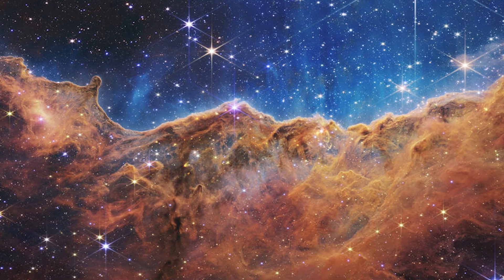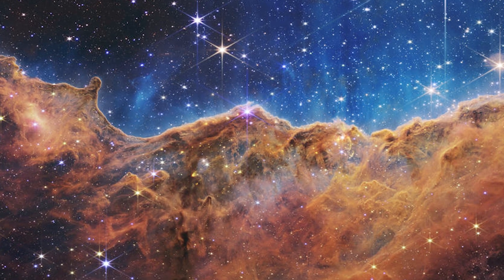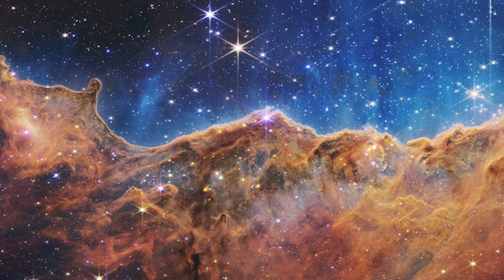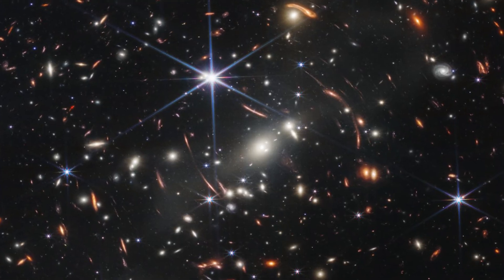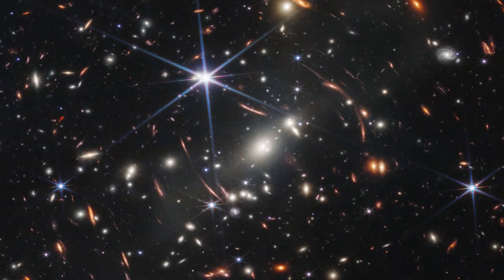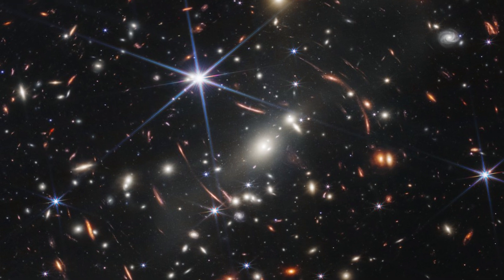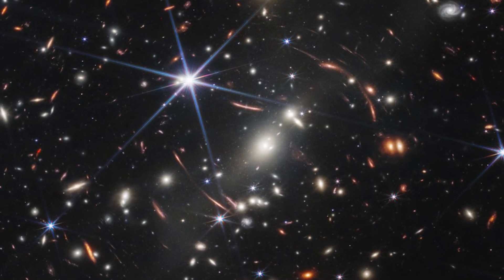The JWST observes the universe in infrared light, allowing it to see through dust that obscures optical wavelength images. This enables the telescope to observe galaxies further away, and further back in time, in order to put together how the first galaxies originated after the Big Bang.